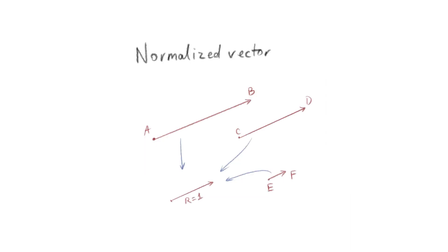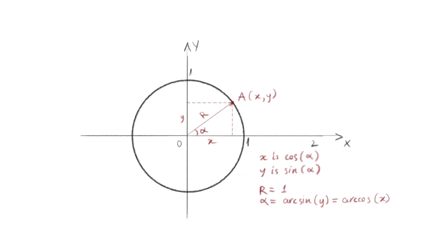Next up is normalized vectors. A normalized vector is a vector that has the length of exactly one unit. We can have many different vectors, but when we normalize a vector we basically reduce the length to one. On a 2D space, the X and Y dimensions of a normalized vector are actually the cosine and sine of the angle.